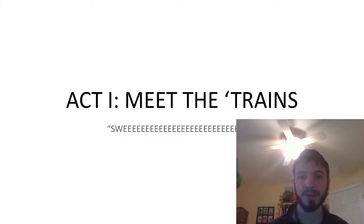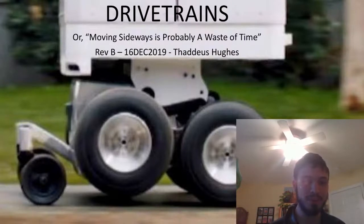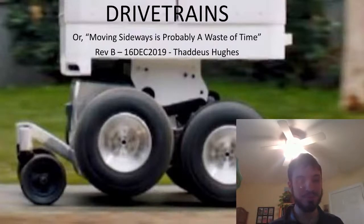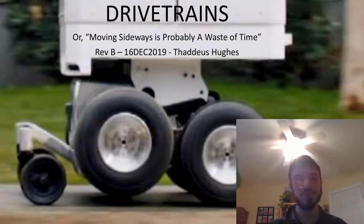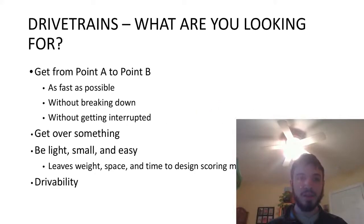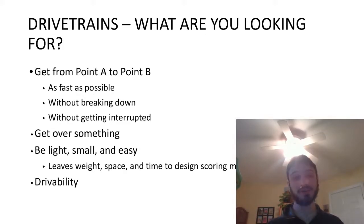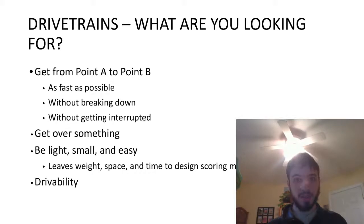In drivetrains, your major objective is to get from point A to point B. There are a lot of different ways to do that — generally things use wheels because wheels are a very easy way to convey yourself from one point to another. You're continuously laying down a new area to go to, but even within that there are a lot of different ways you can be creative and accomplish different behaviors. You want to go from point A to point B as fast as possible without breaking down, without getting interrupted by terrain or other robots pushing you. With most things, we want to be small, easy to design, easy to service, and easy to work on.